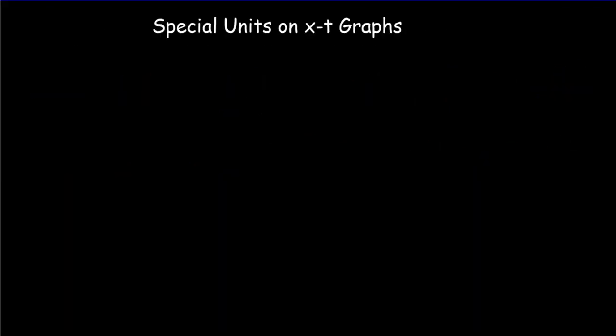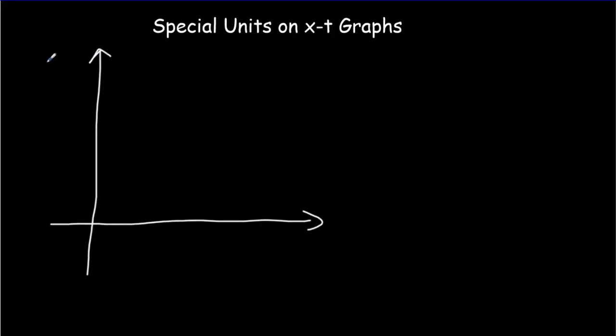This interchangeability between ct and x, and the idea of space and time being merged and entangled, has some interesting effects for the motion graphs we make when studying relativistic physics. One change is that we usually place time on the vertical axis and position on the horizontal. The reason is that time isn't absolute anymore — time is relative — so to remind ourselves that time is no longer the independent variable, we put time on the vertical axis. And we'll be dealing with really high speeds, so we usually change our units.